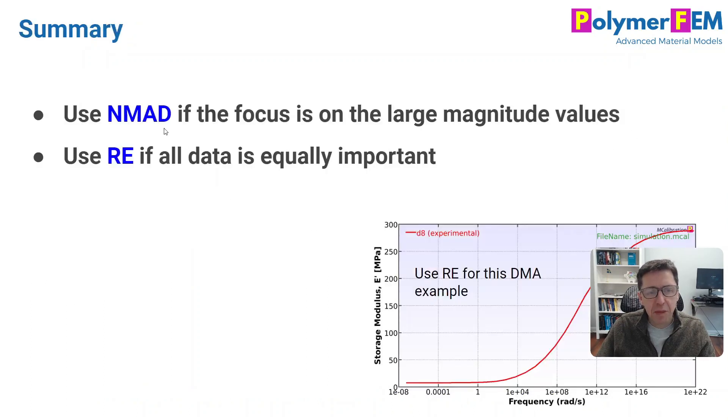To summarize, the NMAD fitness gives more weight to large magnitude data, which can be useful when you plot a stress-strain curve where you may focus on the large strain information. But if you have data where you care as much about small strain or small magnitude information, then the relative error RE, the new fitness measure in MCalibration, will be better. One example where this can be very useful is if you try to fit storage modulus versus frequency information. We have data at very small frequencies with very low storage modulus, but you care about them. In a case like this, where all data points are equally important, I would use the RE fitness value. If you have any questions, you can ask them below.